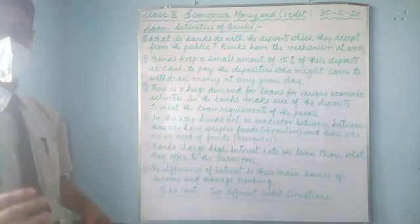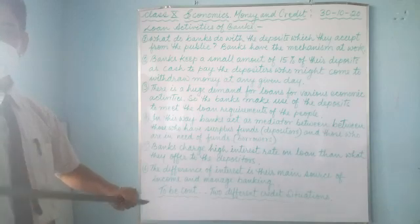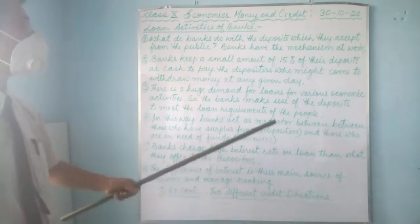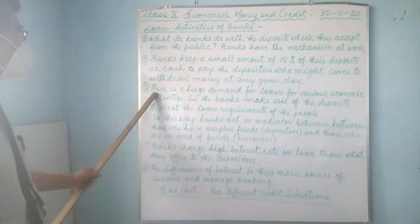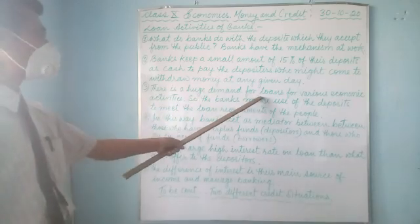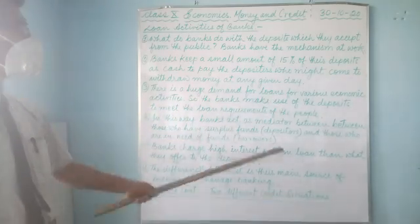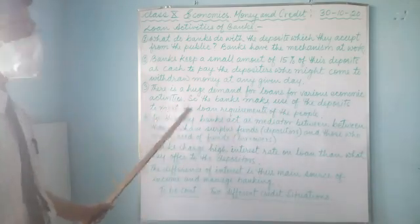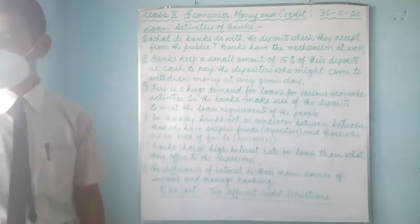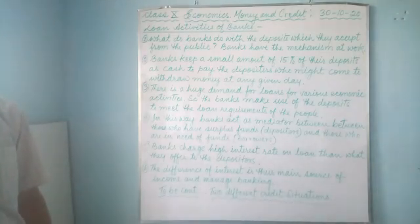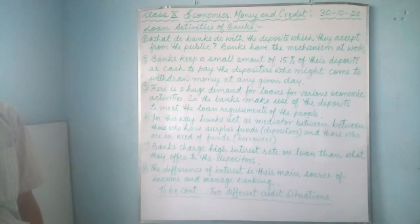That 15% money is the working capital — you can call it turnover. Number three: there is a huge demand for loans. Naturally there is a huge demand for loans for various economic activities. People want to get loans; people seek loans from the bank for various activities.